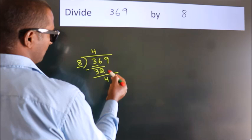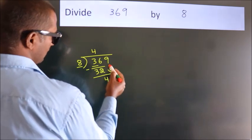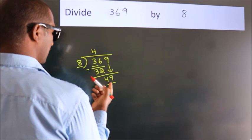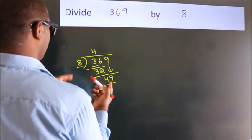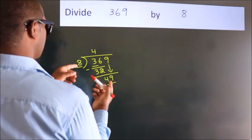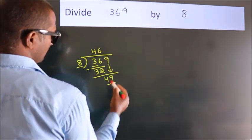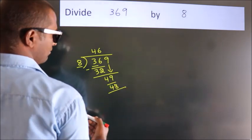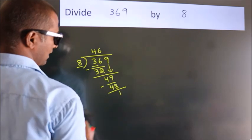After this, bring down the beside number. So 9 down. So 49. A number close to 49 in the 8 table is 8 sixes 48. Now we subtract. We get 1.